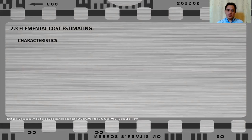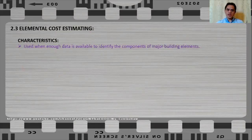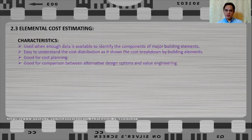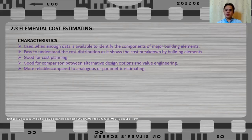Elemental cost estimating is used when there is enough data available to identify the components of major building elements, and it is easy to understand as the cost distribution shows the cost breakdown by building elements. It is also good for cost planning and can be used for comparison between alternative design options and value engineering. Moreover, elemental cost estimating is more reliable compared to analogous or parametric cost estimating.